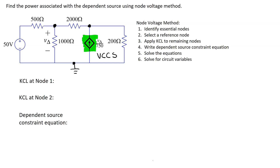Next, we need to apply Kirchhoff's current law to the remaining nodes, so let's label the node voltages. Normally we would label them V1 and V2, but looking at this circuit, V_delta is the voltage drop across the 1000-ohm resistor and is actually equal to the node voltage here. Hence, we label that node V_delta and at the other node we use V1.